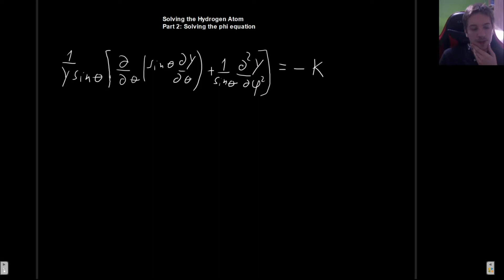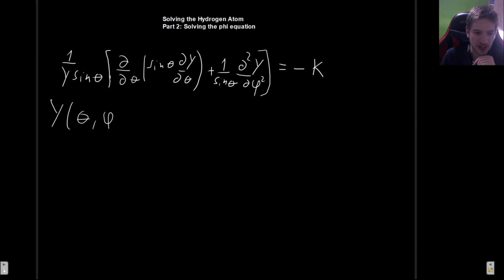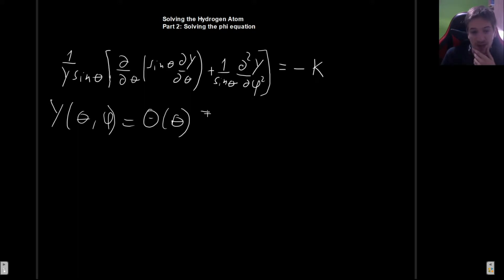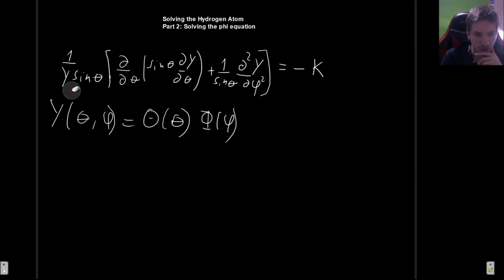The way to do that is going to be very similar to what we did in the previous case. We are going to say that Y is a function of both theta and phi, and we look for solutions of the form of a product between some function of theta — which I'll call big Theta — and some function big Phi that depends on phi. Let's substitute this in and first multiply through by sine theta to make things cleaner.